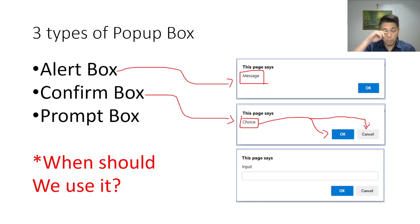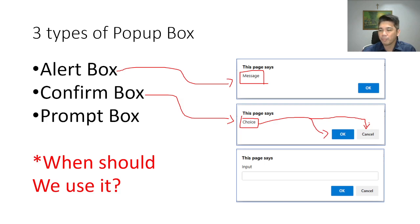What we do with the confirm box is: if the OK button is pressed, we will be coding something — that code will run if OK was clicked. If the user presses Cancel, we also have to do several codings so that the webpage will do something about it.